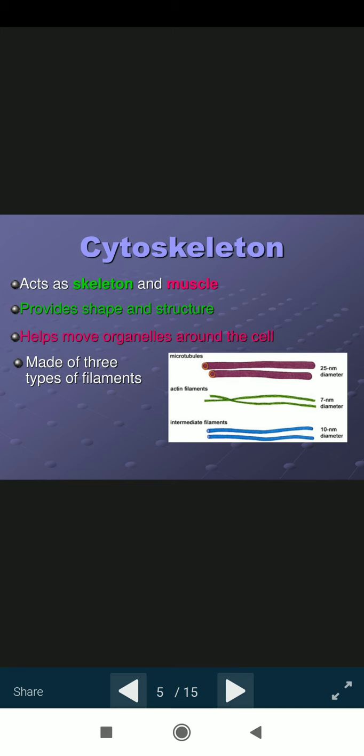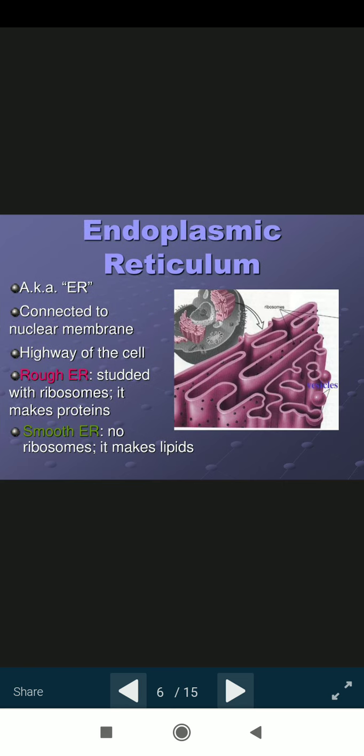These three types of filaments act as a muscle or the skeleton of the cell. One of the important cell organelles is endoplasmic reticulum. Endoplasmic reticulum connected to nuclear membrane. It is also known as the highway of the cell. It stands with the ribosomes and helps in protein making activity.